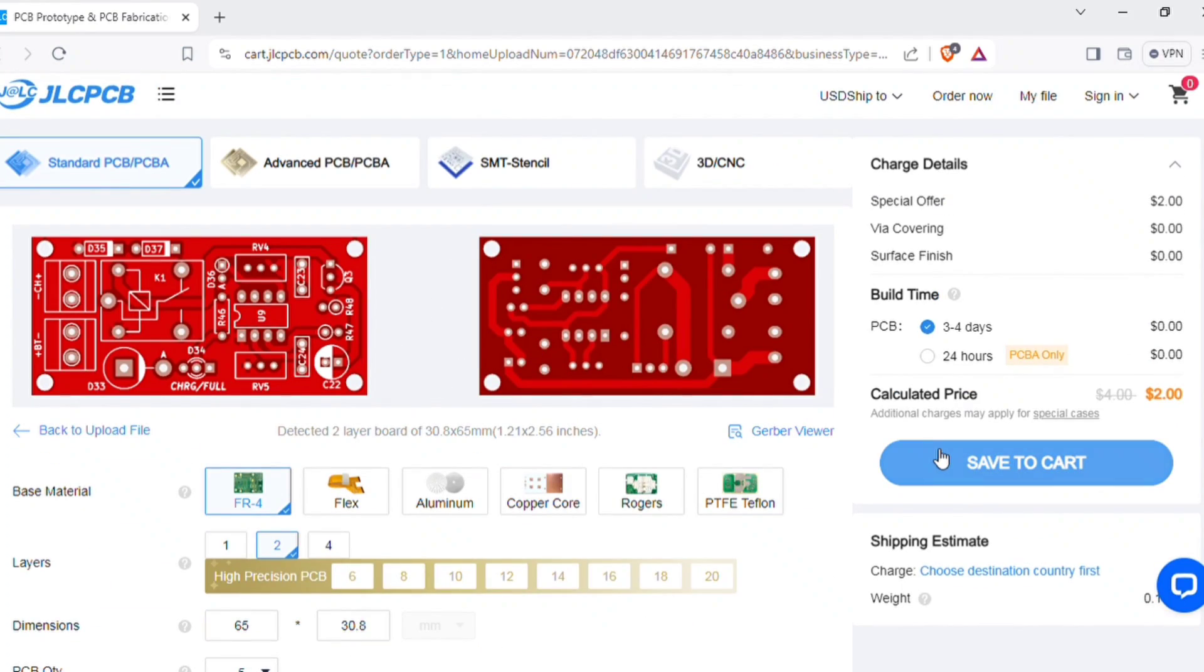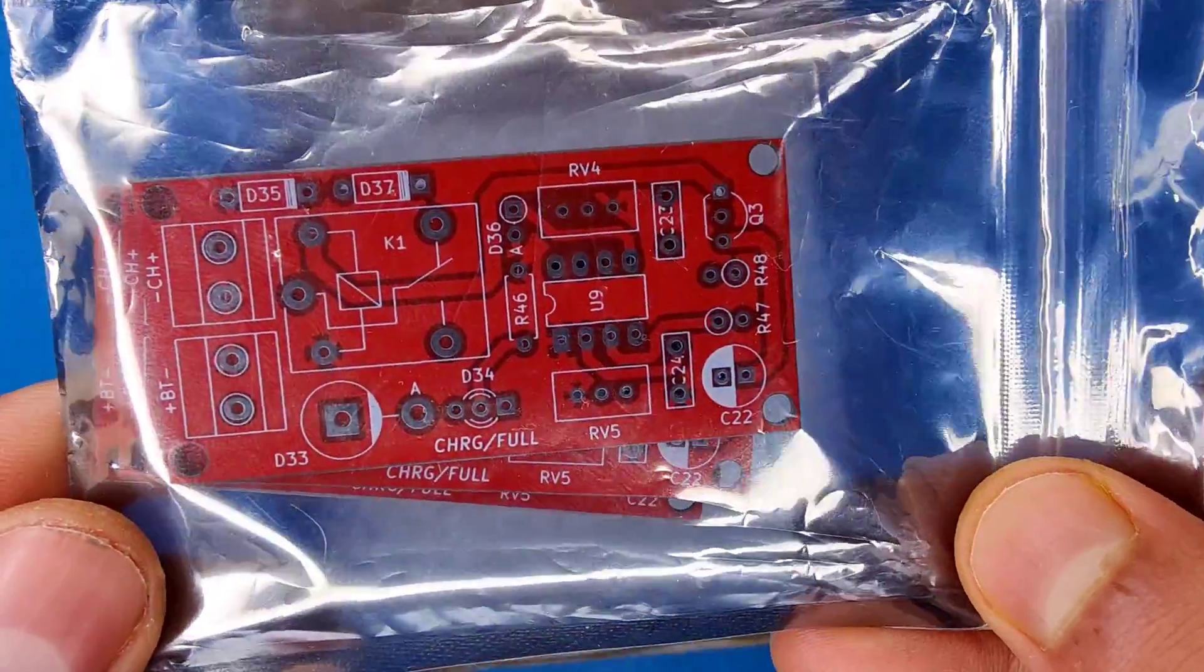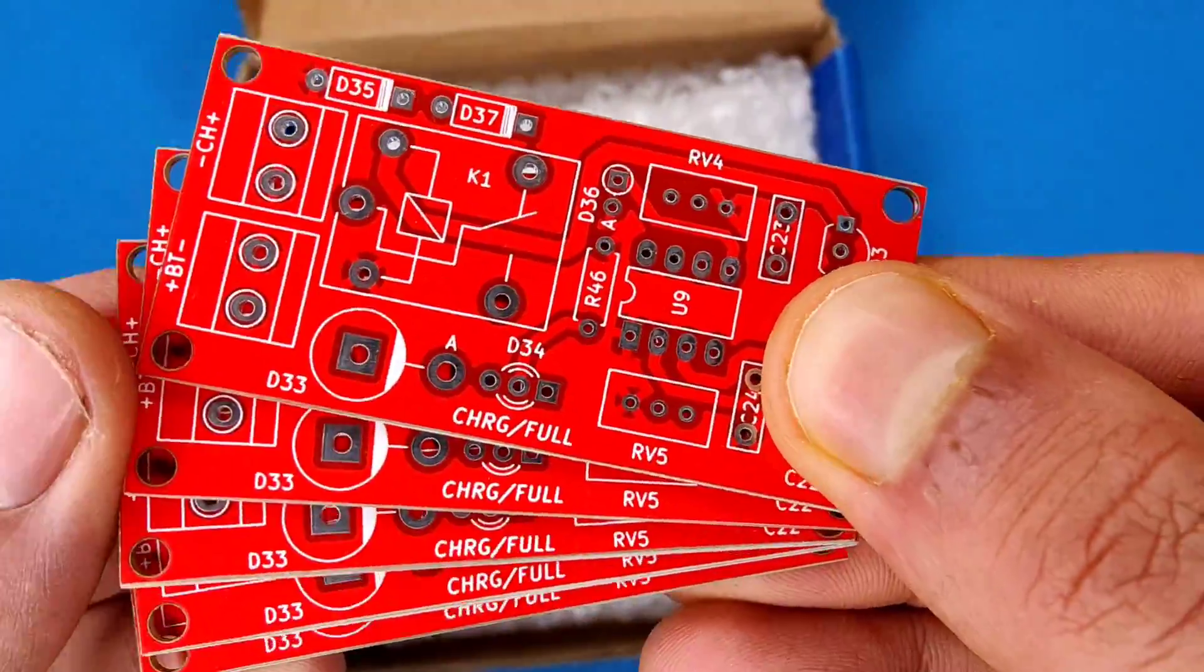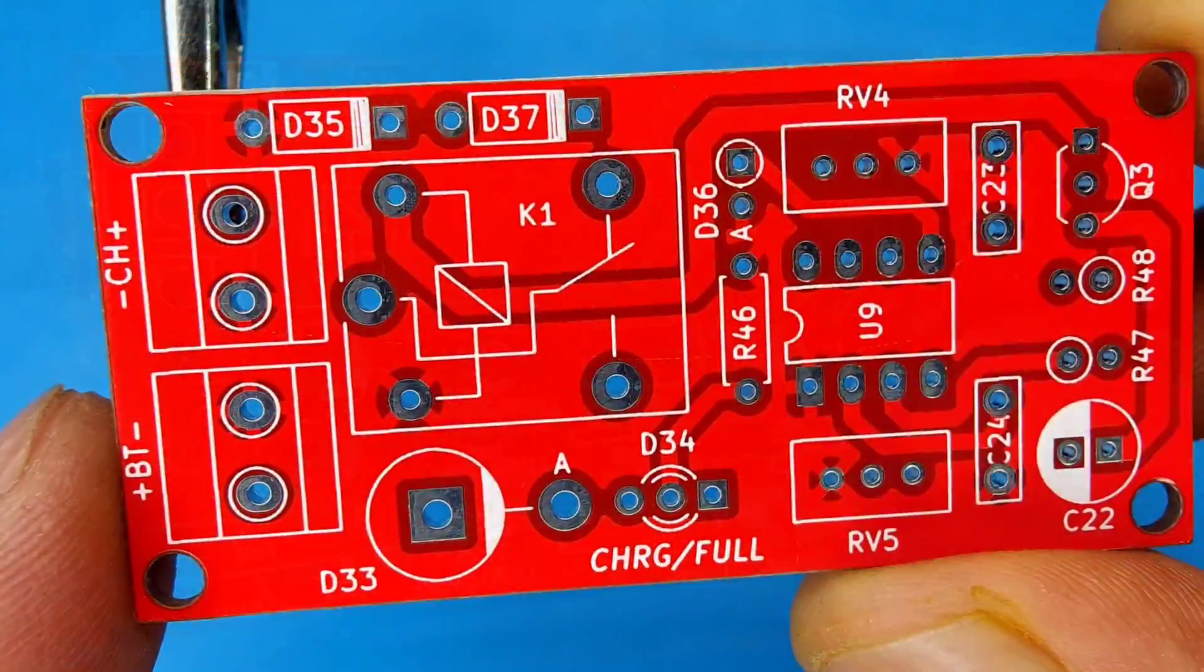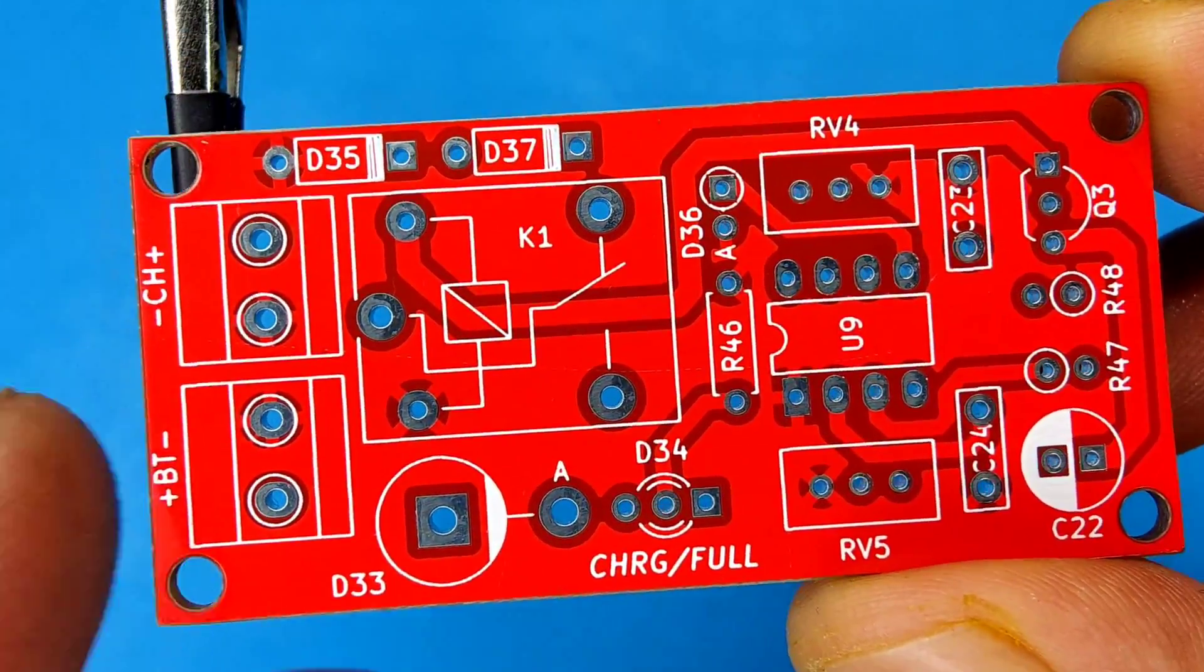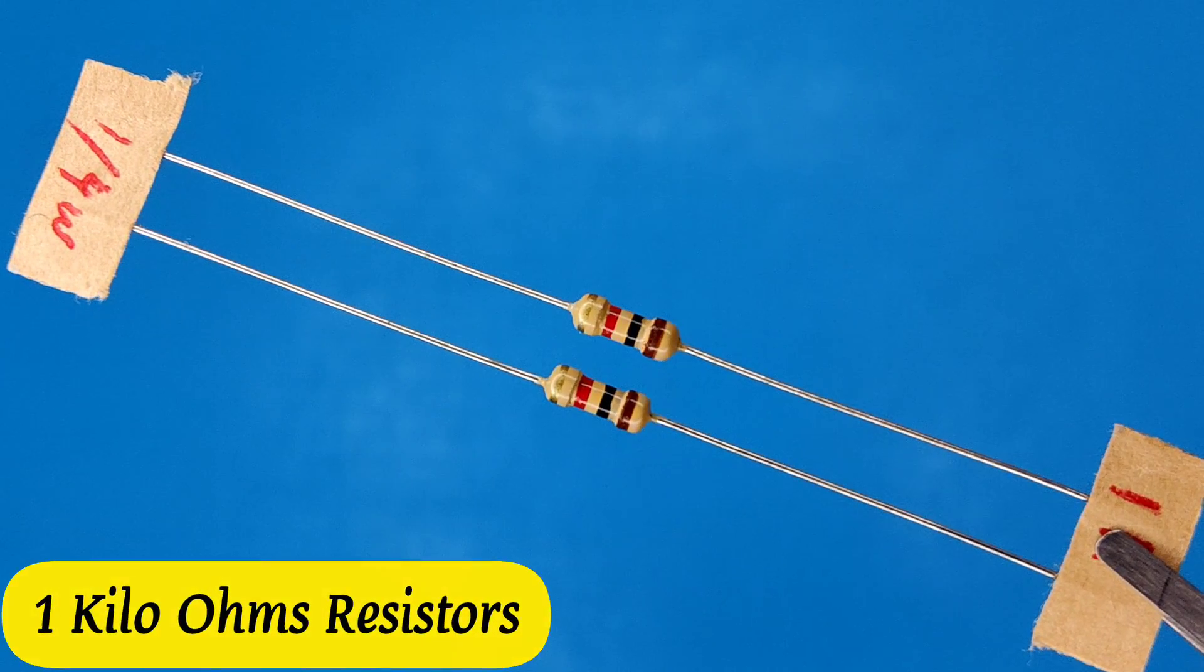Then save to cart for checkout. Within some days I got my order from JLC PCB delivered and the quality of the PCBs is amazing. Five pieces for just two dollars. And now it is time to assemble the PCB, so let's place all the components on the PCB according to the circuit diagram.